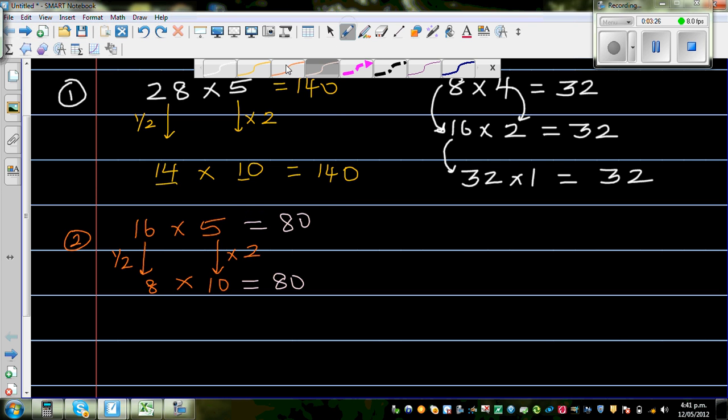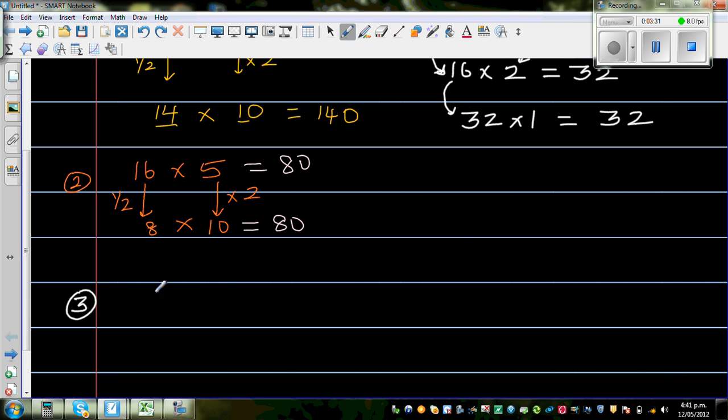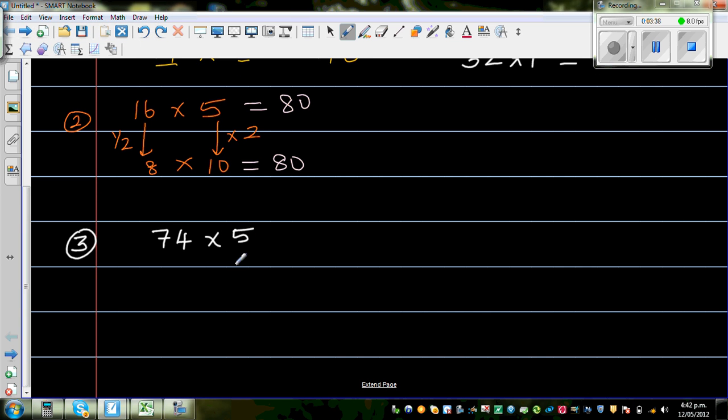Okay so let's take one more question of 5. Let us make it big. So it is 74 times 5. I am going to make this 10. I am going to double this. So if you double this, you have to half this. This is a bit tricky.